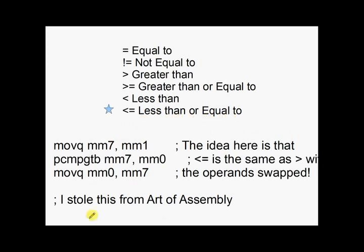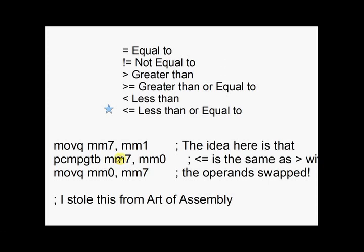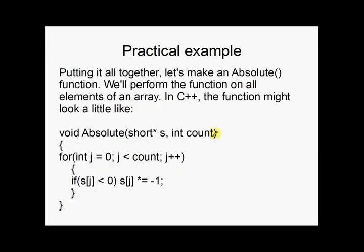Okay. Less than or equal to. I stole this from Art of Assembly. Don't want to stop me. Thank you, Mr. Randall Hyde. Okay. So less than or equal to is actually exactly the same as greater than with the operands swapped. Very clever. Okay. So we find greater than, but we swap the operators and operands. Sorry. That's exactly what I've done here. We've got MOVQ, MM7, MM1. Find the greater than. Oops. Find the greater than, and put that in MM7. That's the swapped operands version. See, we're comparing MM0 to MM1, but I've swapped the operands. And finally, move that answer back into MM0.